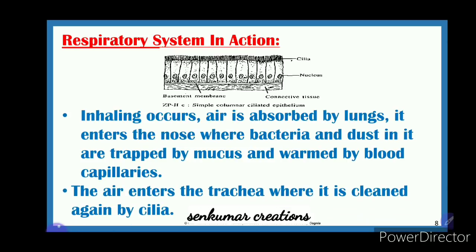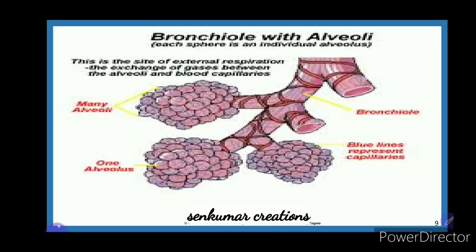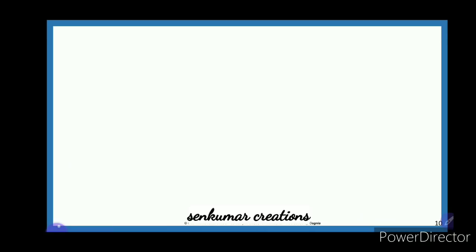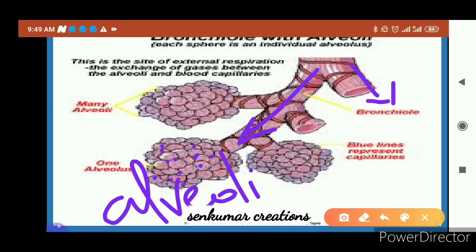The air enters the trachea where it is cleaned again by cilia as it passes through. When the air reaches the lungs it becomes very clean, and the oxygen can then be used for respiration. You can see the bronchiole with alveoli here. From the trachea, the air goes into the bronchi, which divides into many bronchioles deep inside the lungs.